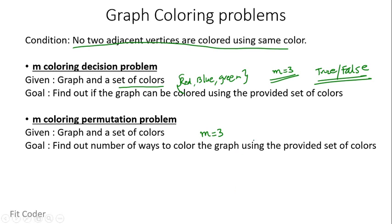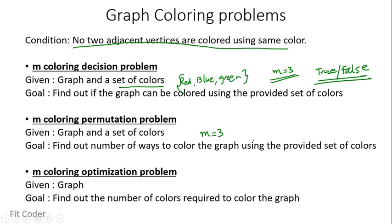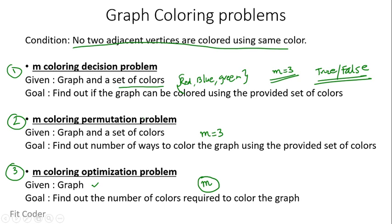The last category is the M coloring optimization problem. Here we are given a graph and we have to find the minimum number of colors required to color the graph — basically finding the minimum value for M. All graph coloring problems can be categorized into these three types.